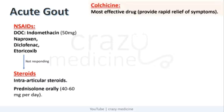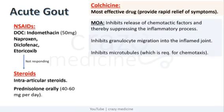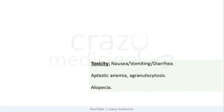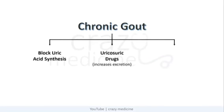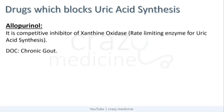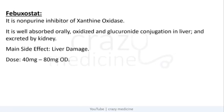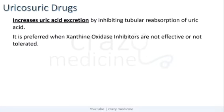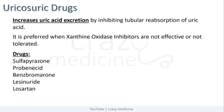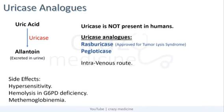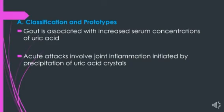The next disease is gout. Gout is characterized by elevated serum uric acid levels. Uric acid has low water solubility and gets precipitated in the joints, kidneys, and subcutaneous tissues. Secondary hyperuricemia may result due to excessive production or breakdown of uric acid from drugs such as ethambutol and clofibrate.